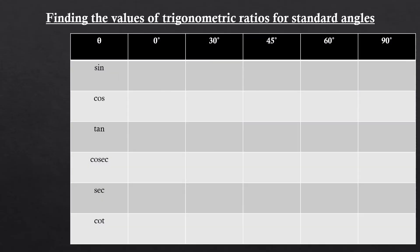Once we have the sine values, we create a table and fill in all the values. Within a few minutes you will have the trigonometric ratios for all standard angles. For sine, starting from 0°: 0, 1/2, 1/√2, √3/2, and 1.